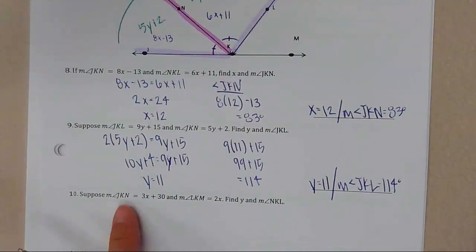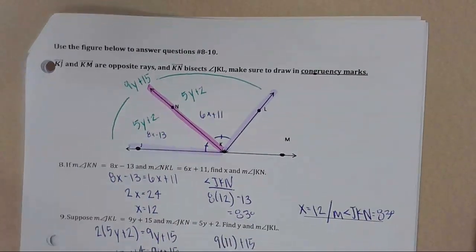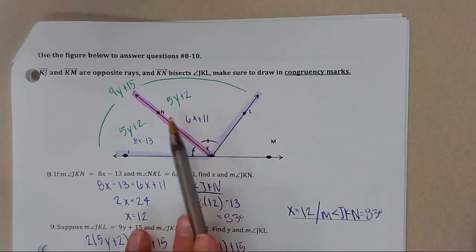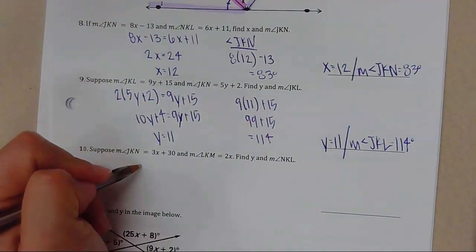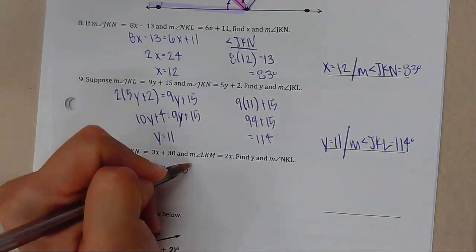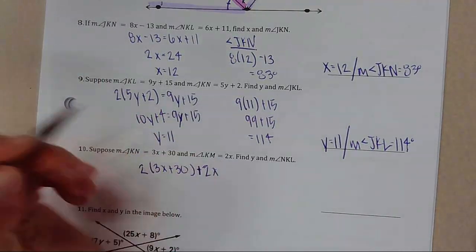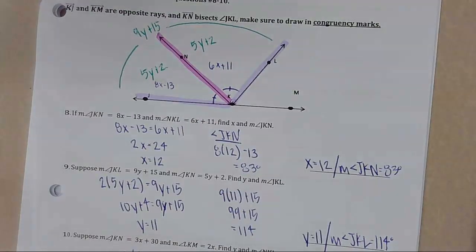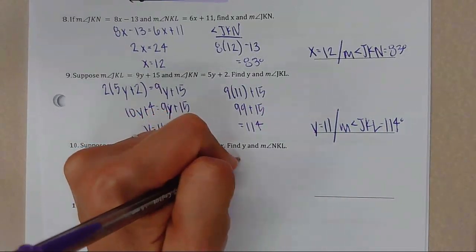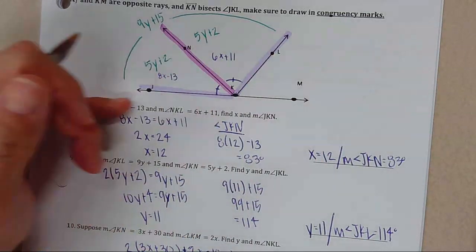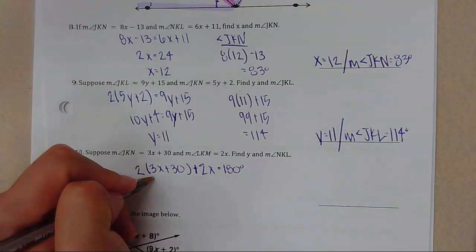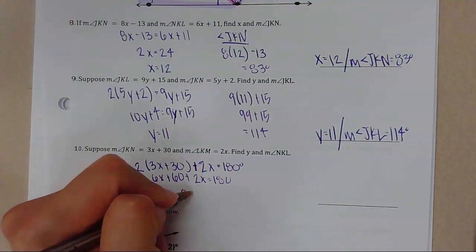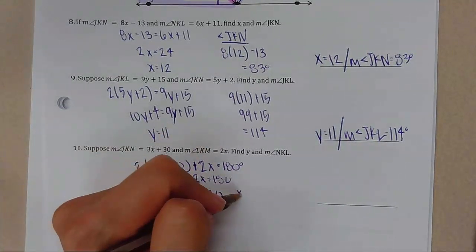Looking at angle JKN and angle NKL — these are equal to each other. I'm going to set up: 2(3x + 30) + 2x = 180, because these three angles form a straight line. Simplifying: 6x + 60 + 2x = 180, so 8x = 120, and x = 15.